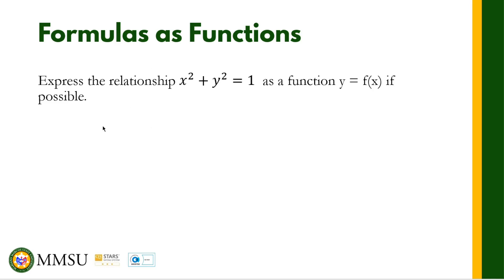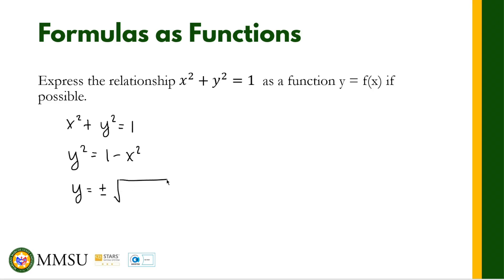So we have x squared plus y squared is equal to 1. Rearranging, y squared is equal to 1 minus x squared. Taking the square root of both sides, y is equal to positive and negative square root of 1 minus x squared. We end up with an equation where the output is not unique — for a single input x, there are two possible outputs for y. This means that this is not a function.